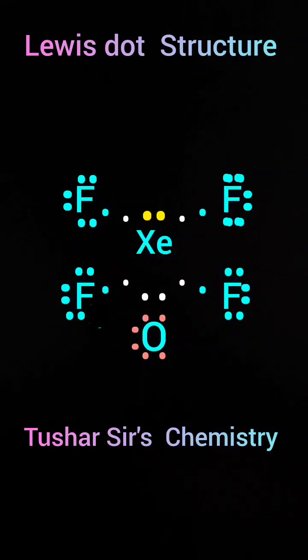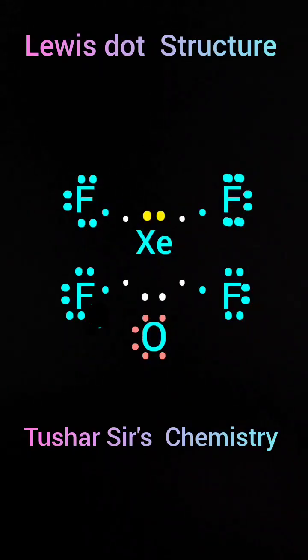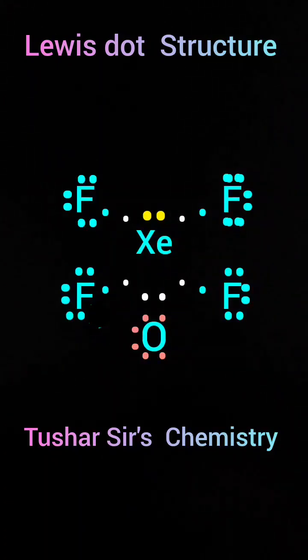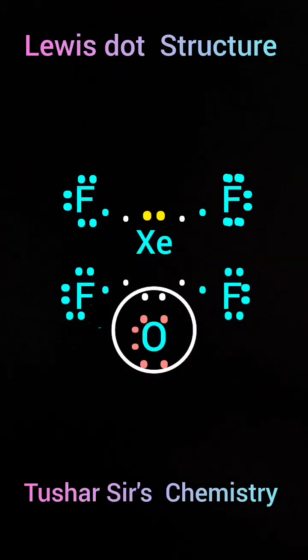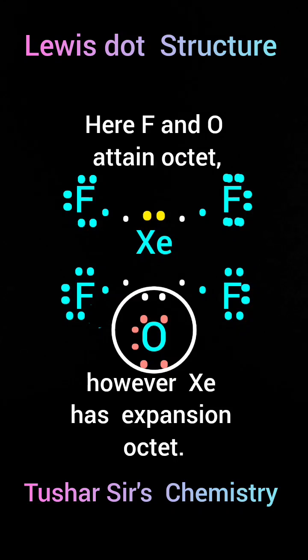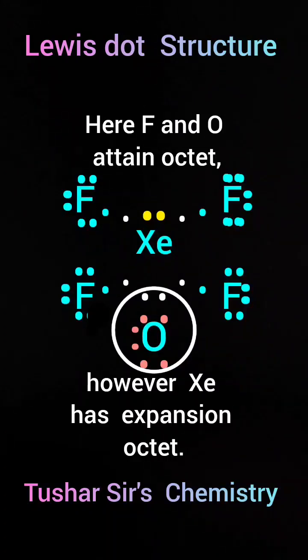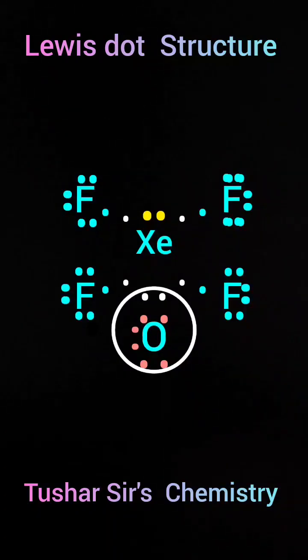Another pair of electrons will remain as a lone pair. This is the Lewis dot structure of XeOF4. And the other four electrons of oxygen will remain away from xenon. Those four electrons are treated as two lone pairs on oxygen.